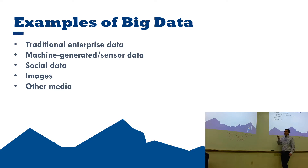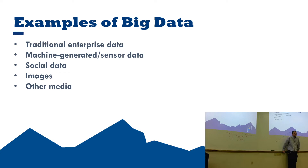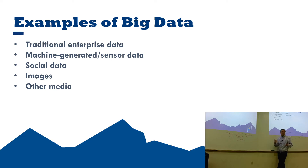Some examples of big data: traditional enterprise data — things like transactions and master data — is pretty structured and fits nicely into a database, but it's also very large in most cases. Consider Tesla: they're going to have a table for supercharger usage, and if you think about all those transactions, they're easily in the millions each day.